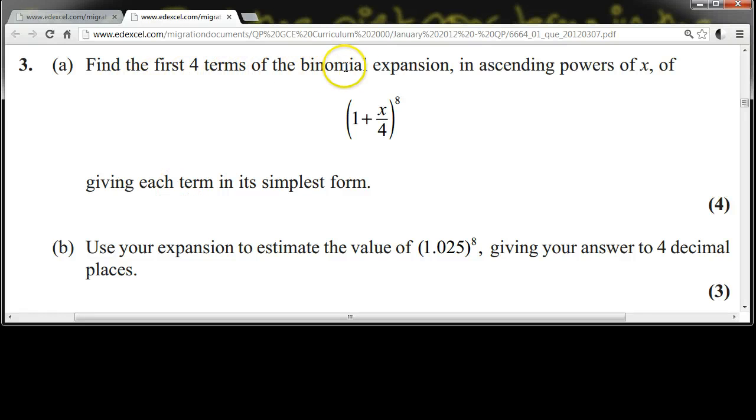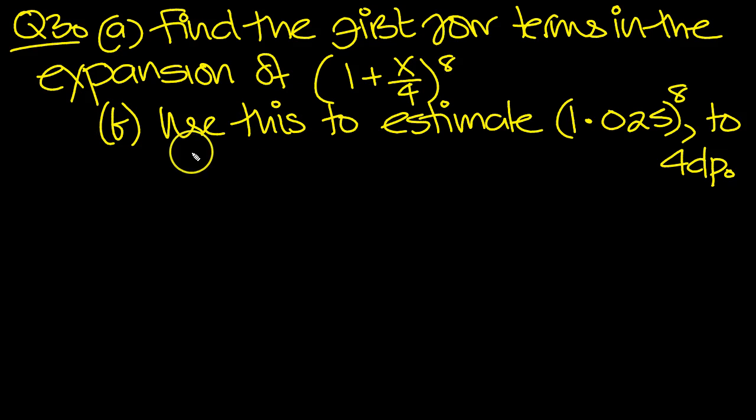Find the first four terms in the binomial expansion in ascending powers of x of 1 plus x over 4 to the power 8, giving each term in its simplest form. Use your expansion to estimate the value of 1.025 to the power 8, giving your answer to four decimal places. So let's have a look at this then.